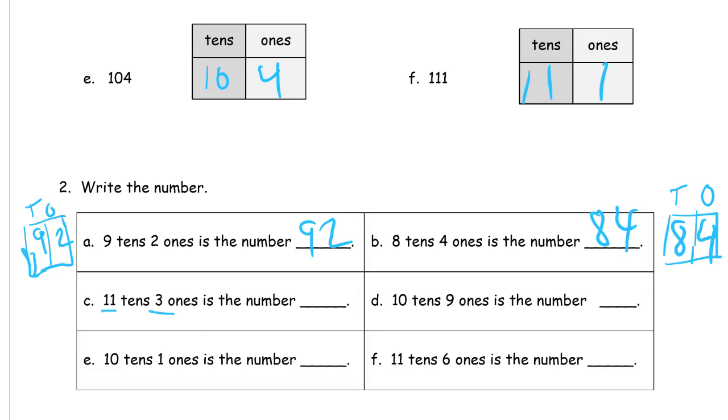Eleven tens, three ones is the number 113. Ten tens, nine ones is the number 109. Ten tens, one one is the number 101. Eleven tens, six ones is the number 116.